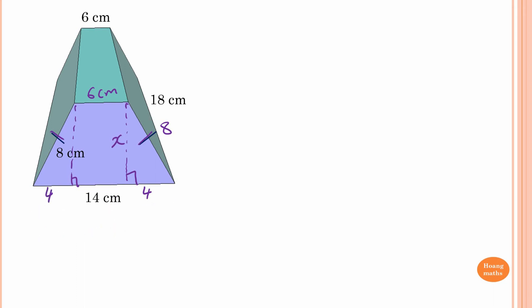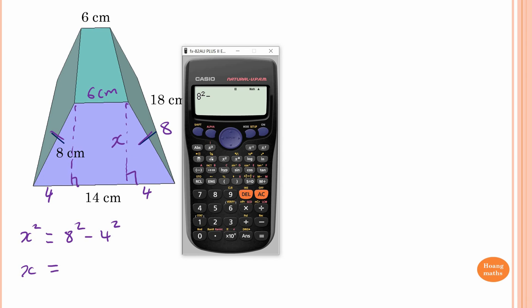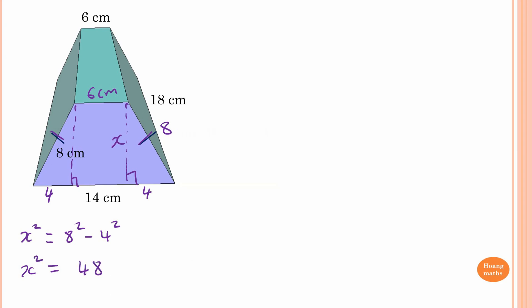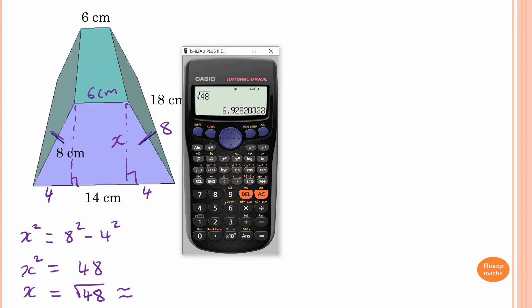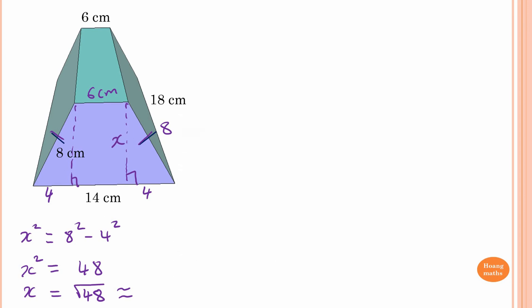Now we use Pythagoras' theorem to find x. X squared equals 8 squared minus 4 squared, because 8 is the hypotenuse — the longest side. So x equals the square root of (8 squared minus 4 squared), which is the square root of 48, approximately 6.93. Please take note: if you round too early, the answer will be slightly different. Use the exact value stored on the calculator, not the rounded 6.93.